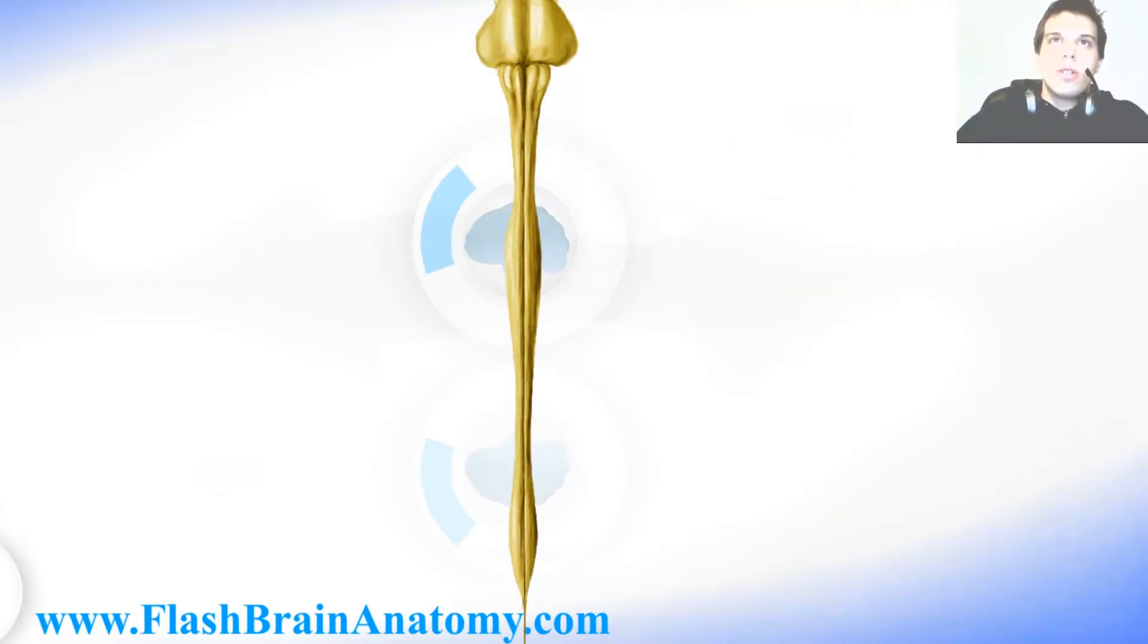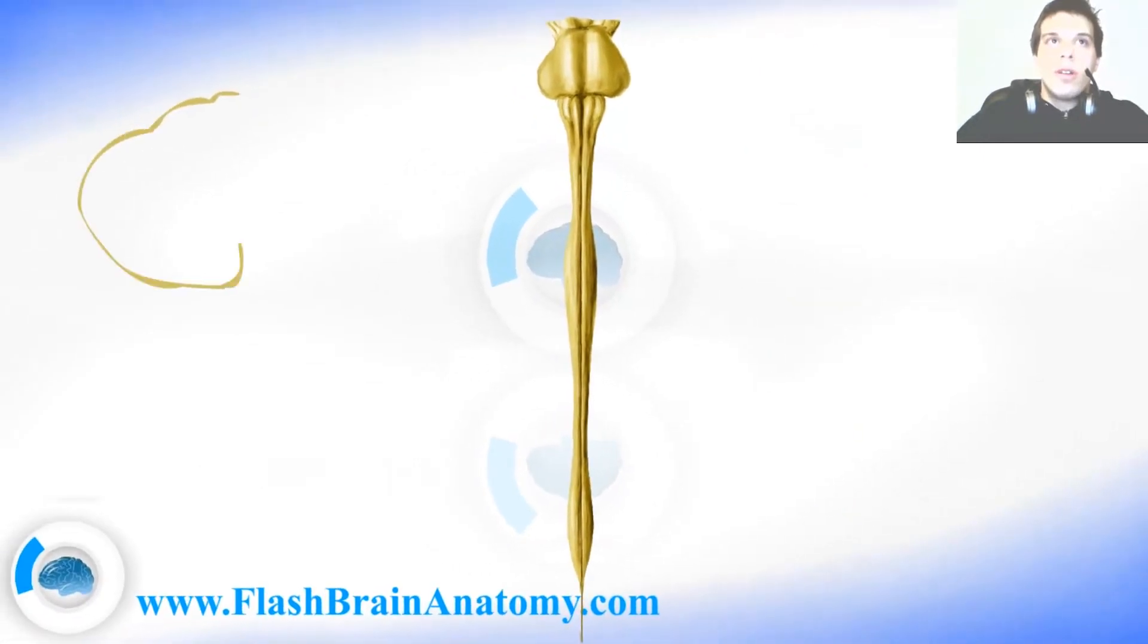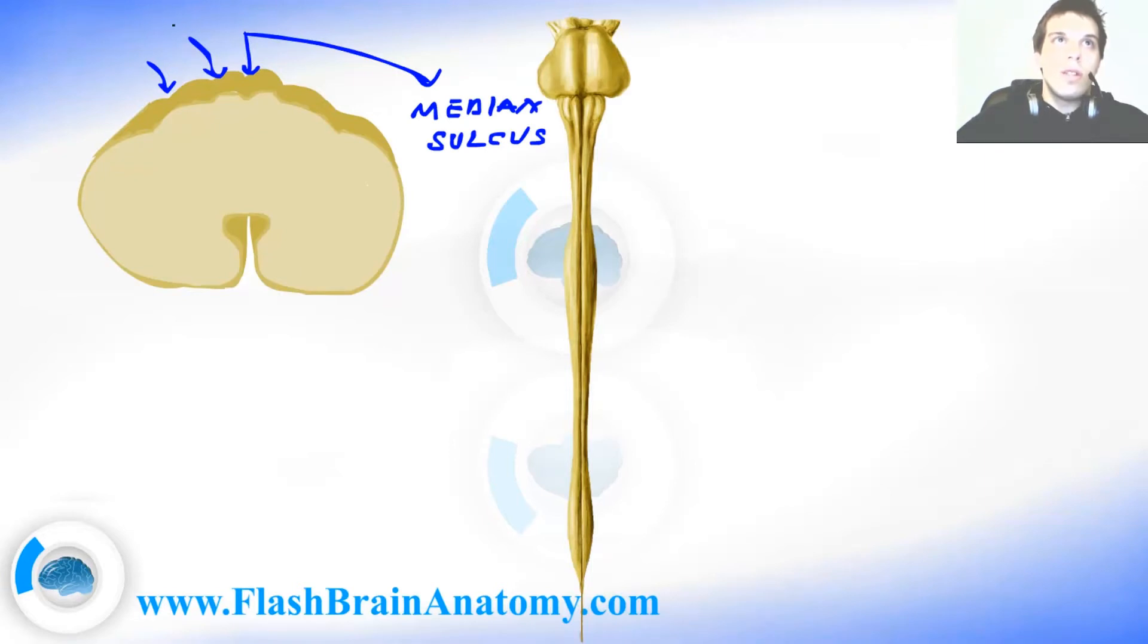Now I drew some cross sections of the spinal cord. First we had the cervical segment. Behind here you can see the median sulcus. Right next to it is the posterior intermediate sulcus, and more lateral is the posterolateral sulcus. So let me write it all down. This was the median sulcus, then we had the posterior intermediate sulcus, and this over here was the posterolateral sulcus.